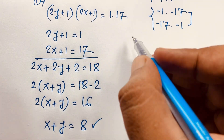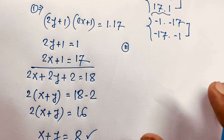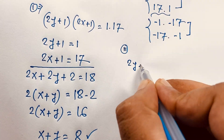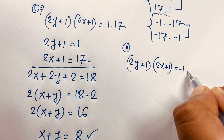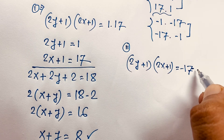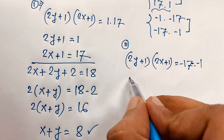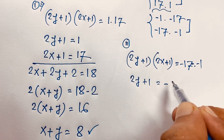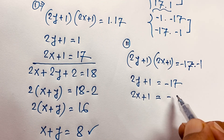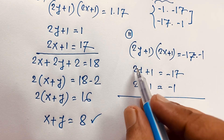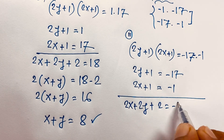Then if I take the negative value — we know that in our second case we will find out the same answer, 17 and 1. So: 2y plus 1 and 2x plus 1 equals minus 17 times minus 1. Sorry, minus 17 times minus 1. So you can see easily 2y plus 1 is equal to minus 17, and 2x plus 1 is equal to minus 1. Then if I add both, it will be 2x plus 2y plus 2, which is minus 18.